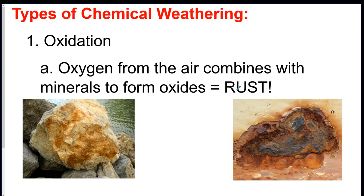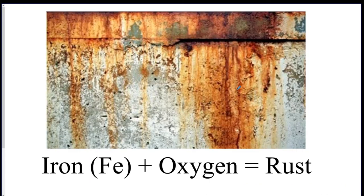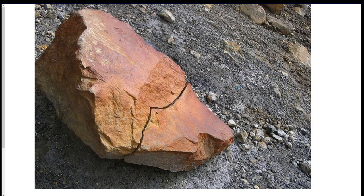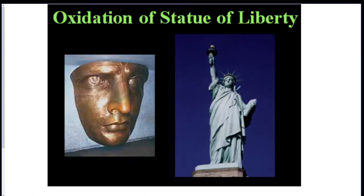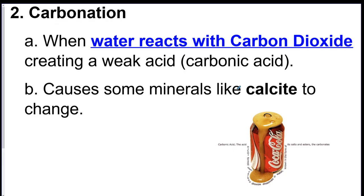Oxidation is when oxygen in the air combines with some minerals in the material and you get rust, like these pictures below. The formula is: iron plus oxygen equals rust. The Statue of Liberty went through the process of oxidation — it used to be copper. Copper reacted with the oxygen and you get the green color that you see at the Statue of Liberty now.